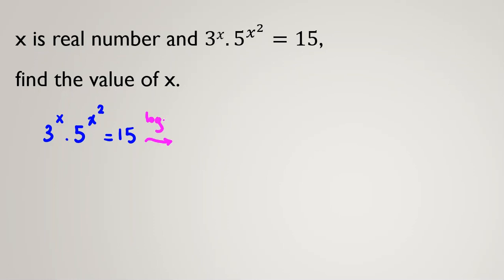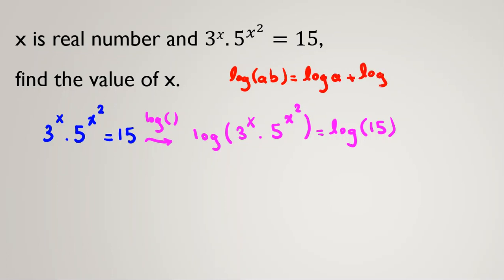We take log from both sides. Then we have log(3^x · 5^(x²)) equals log 15. We have one important rule in logarithm that log(AB) is equal to log A plus log B.